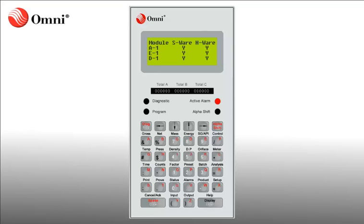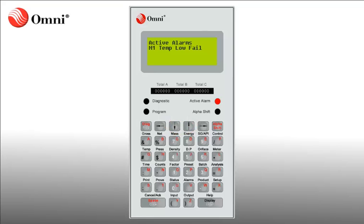To display the alarms, press the Alarms button and then press the Display button. A list of the active alarms will now populate the OmniFlow computer's display screen. You may need to scroll to view all active alarms using the up and down arrows.